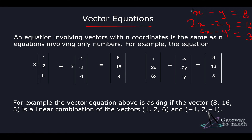To write them in the form of a matrix, the coefficients of x — 1, 2, 6 — go in one column, and the coefficients of y — minus 1, minus 2, minus 1 — go in another, and this equals 8, 16, and 3. When representing them in vector form, what we're saying is: multiply one vector with a scalar, multiply the other vector with another scalar, and when you add them together you should get the original values back.